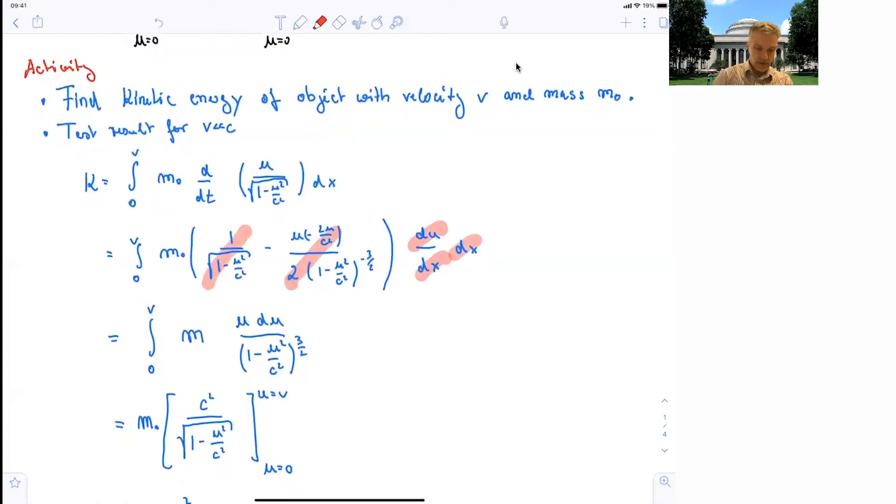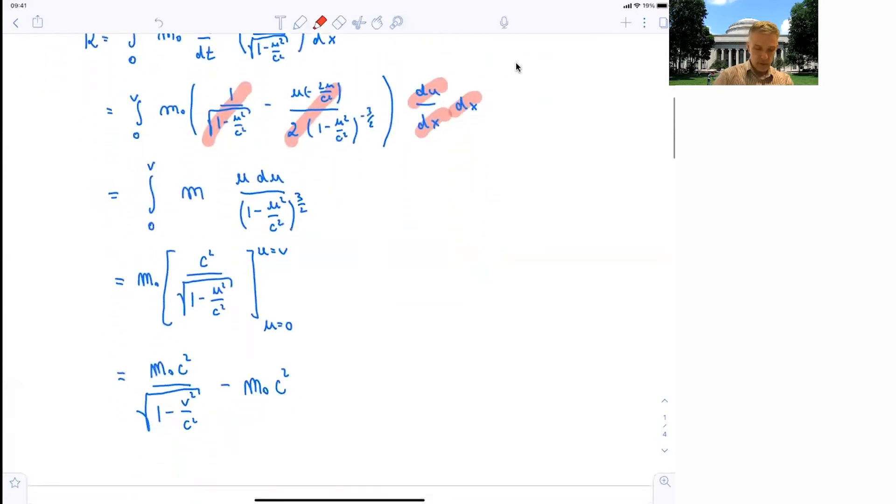But you find that this is equal to m0 times c squared over square root 1 minus u squared over c squared, which you have to evaluate for velocities v and 0. And when you do that, you find those two components here.